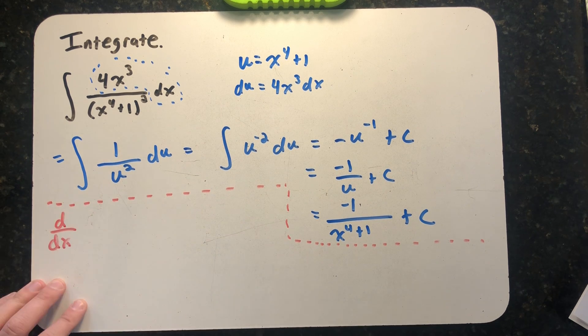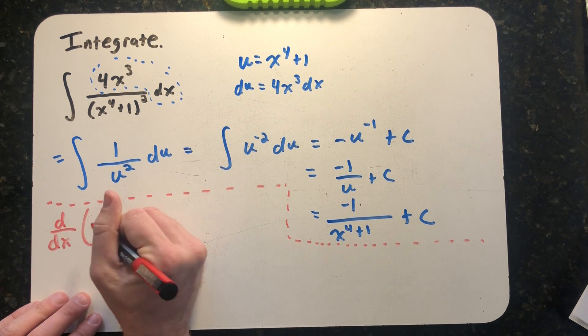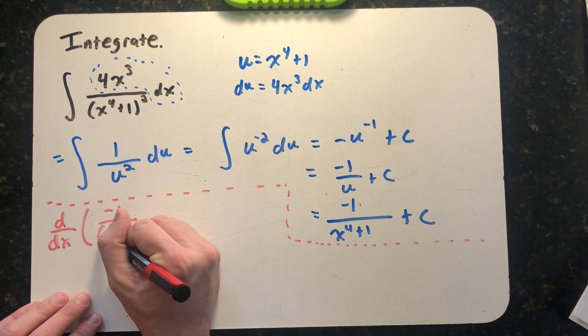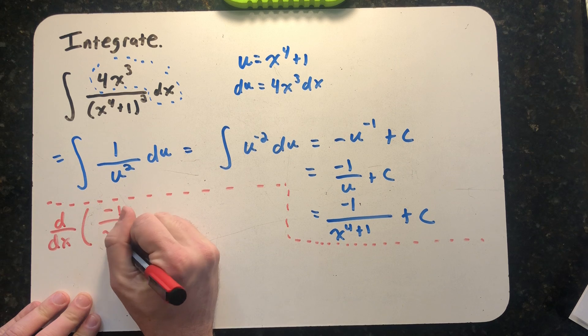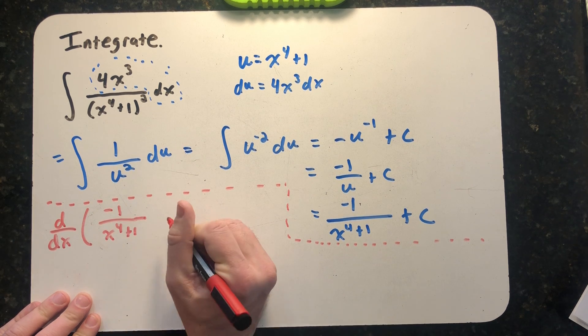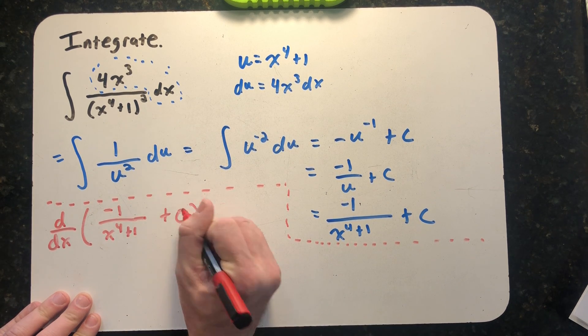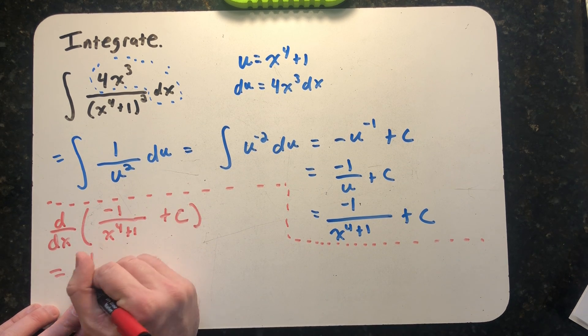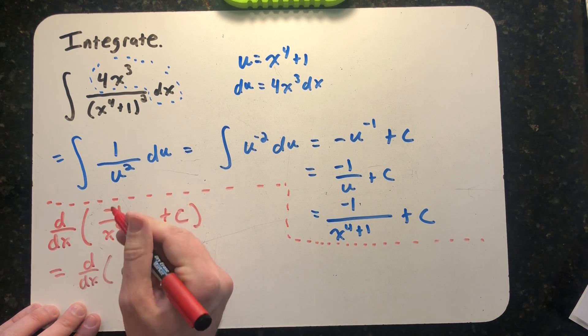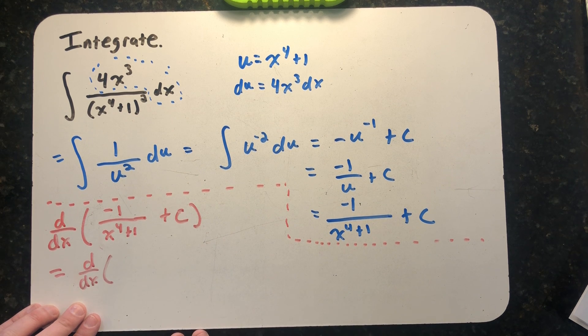I want to take the derivative of -1/(x⁴ + 1) + c. The derivative of the constant is zero, so I just need to worry about taking the derivative of -1/(x⁴ + 1).